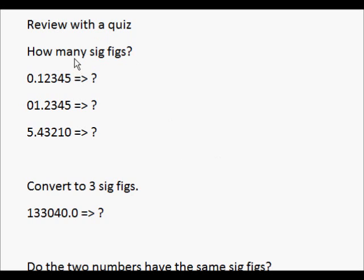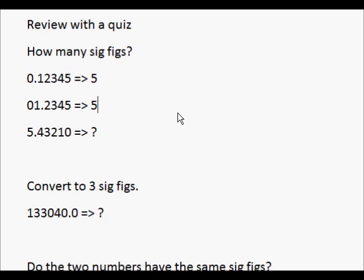Okay, let's review with a quiz. How many significant figures do the following numbers have? The first one has a decimal point. Remember that we don't count leading zeros, so those don't matter. Since it has a decimal point, all the digits are significant except for the leading zeros — so there are 5 significant figures. What about this one? That's right, there are 5 again: 1, 2, 3, 4, 5. And the last one — how many significant figures? This one has 6: 1, 2, 3, 4, 5, 6.